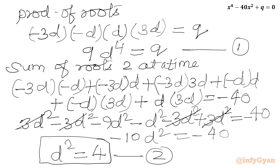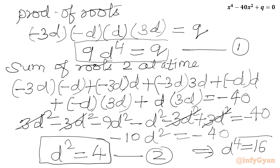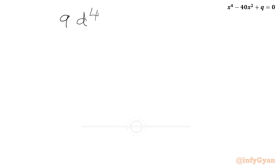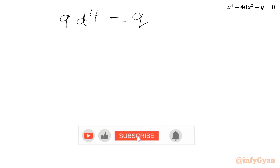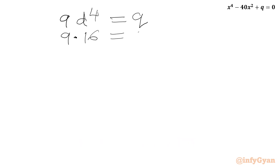Now using equations 1 and 2: from equation 2, d² = 4, so squaring both sides gives d⁴ = 16. Substituting into equation 1: 9 × d⁴ = q, and d⁴ = 16, so q = 9 × 16 = 144.